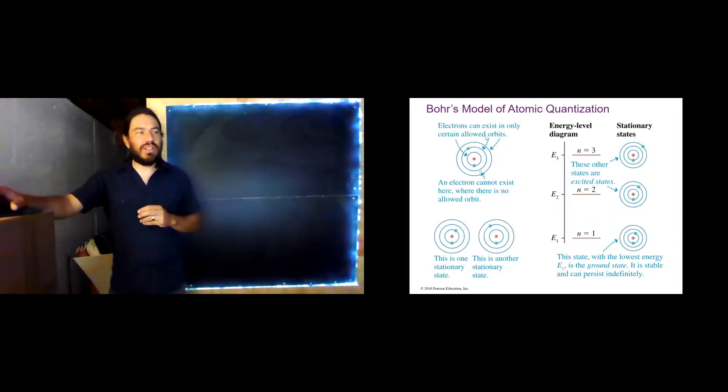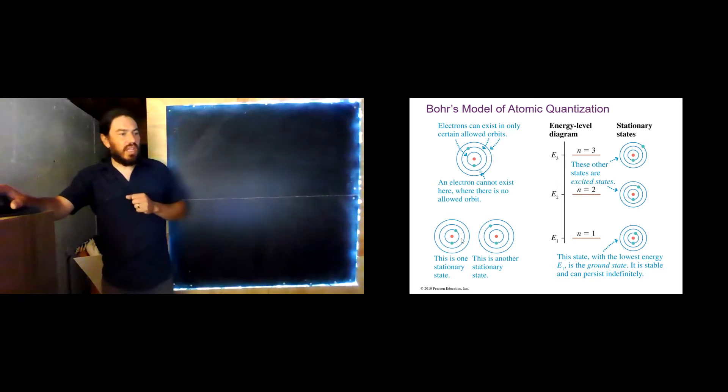Bohr proposed that maybe the electrons exist only in certain allowed orbits, and for some reason or another, they're not allowed to go to other orbits. And these are what we can call stationary states. So here might be one stationary state, here might be another stationary state.